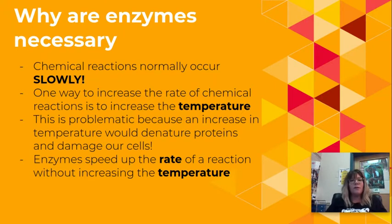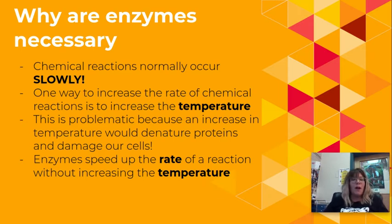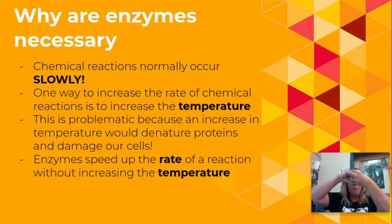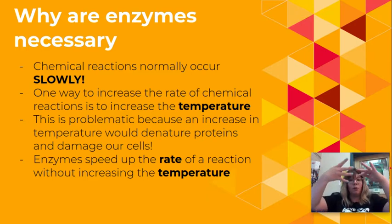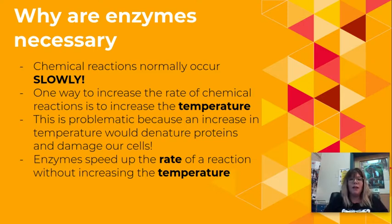A fever of 104 degrees Fahrenheit can actually land you in the hospital. Anything higher than that for extended periods of time can cause delusions and possibly brain damage, because your brain is made out of proteins. At high temperatures proteins denature — they're normally folded in a tight ball, but when overheated they unravel and pull apart and no longer work. If an enzyme is supposed to match a specific substrate and it changes its shape, that enzyme and substrate can no longer match and they won't work. So we need enzymes to speed up the rate of reaction in our body because we cannot increase the temperature.